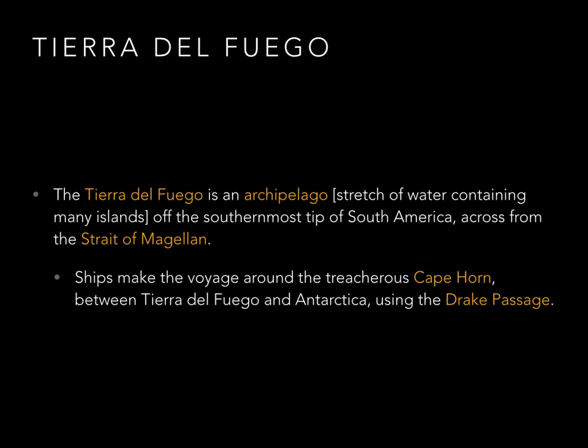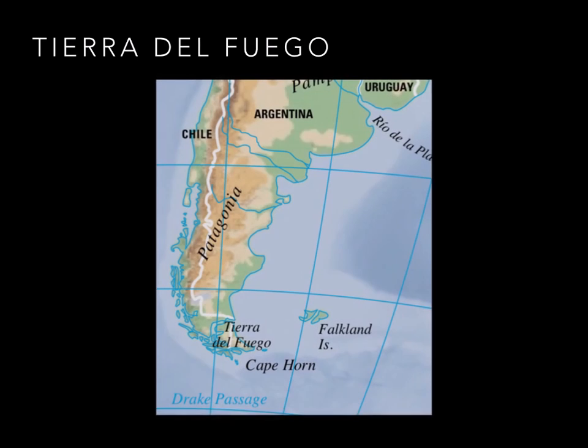Tierra del Fuego means 'land of fire.' It's an archipelago — a stretch of water containing many islands — lying off the southernmost tip of the South American continent, just across what's called the Strait of Magellan. Ships, before the Panama Canal, had to make the treacherous voyage around Cape Horn, an area between Tierra del Fuego and Antarctica, using a narrow passageway called the Drake Passage, named after the famous explorer Sir Francis Drake.